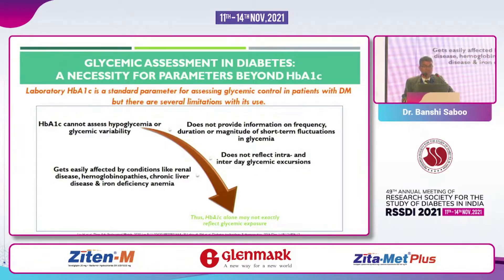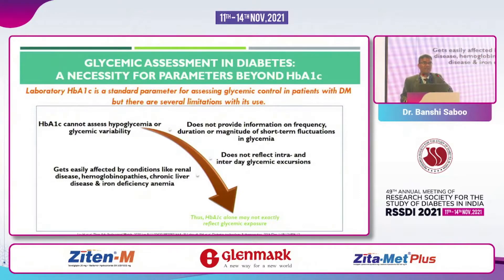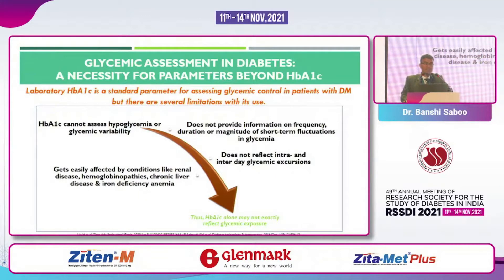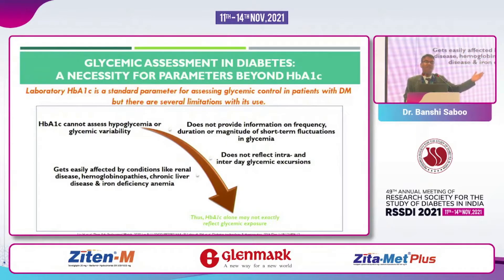A1c does not provide any information on frequency, duration, or magnitude of short-term fluctuation of glycemia. HbA1c cannot assess hypoglycemia and glycemic variability. It gets easily affected by conditions like renal failure, hemoglobinopathies, chronic liver disease, or even iron deficiency anemia. So we are now moving beyond A1c.